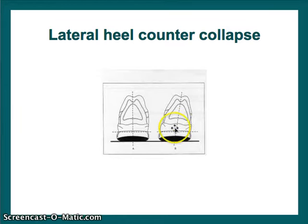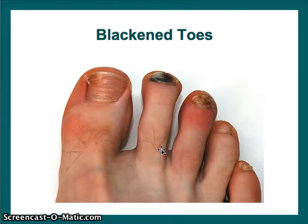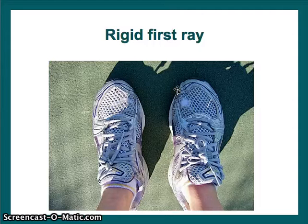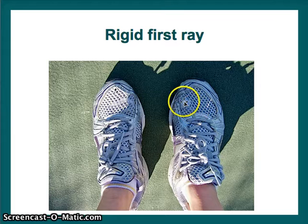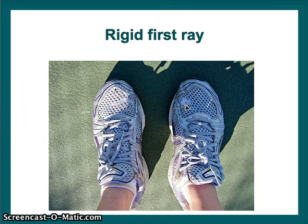For a blackened hallux toe, typically the toe box is too short and you'll want to find a shoe that has a longer one. A rigid first ray is interesting — the hallux actually wears through the upper and there are little holes up in there, because this first ray or toe does not move very much. When they walk, this first ray is always pulled into extension and it actually wears through the upper.